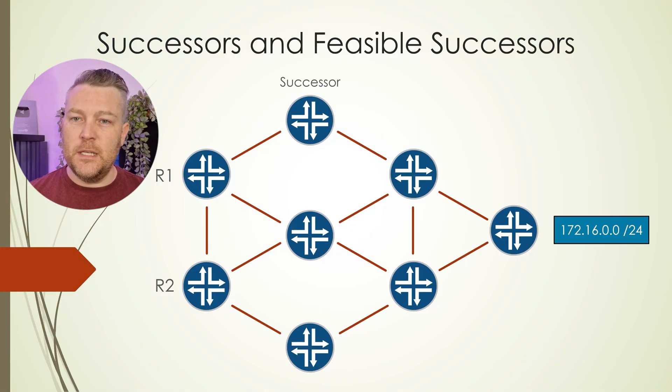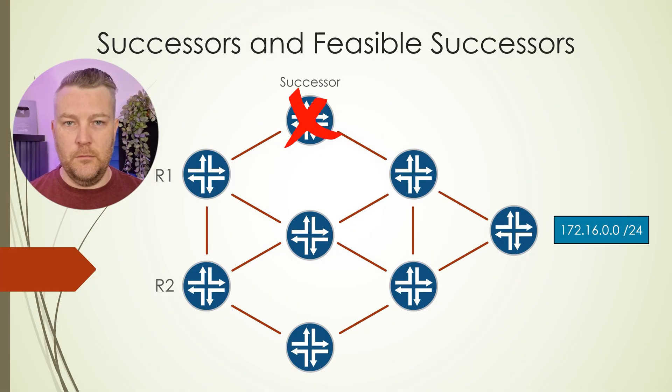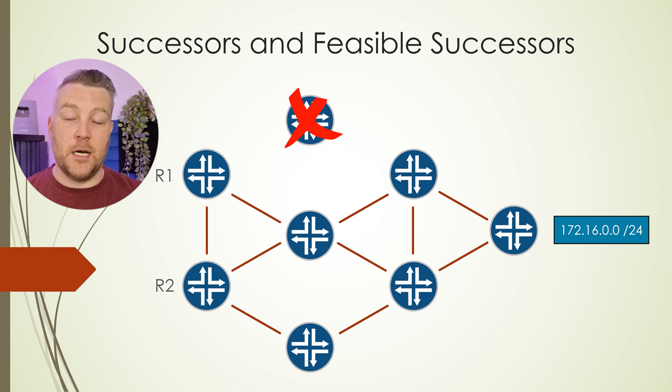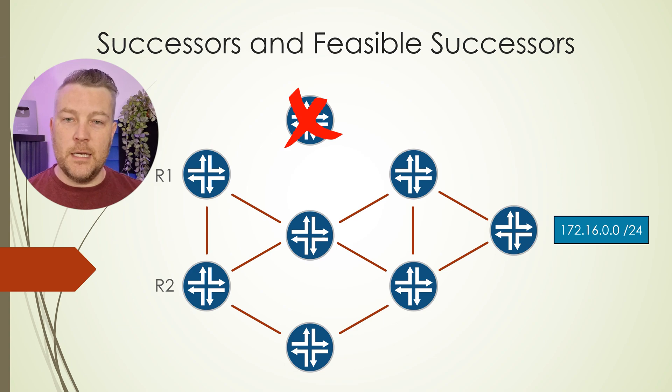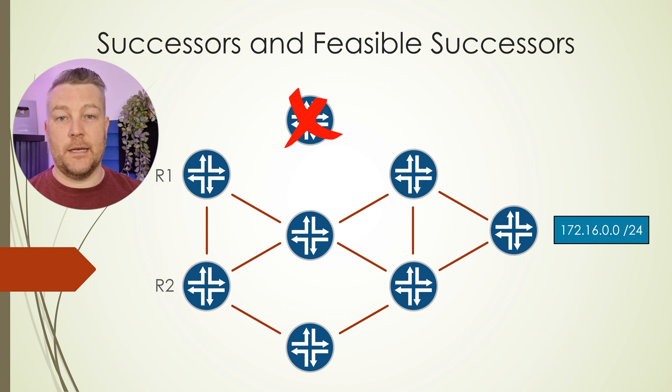Let's think about what happens when a path to a route fails. This could be because of a broken link, or perhaps a router has failed or something like that. So if the successor route has failed for some reason, the first thing that EIGRP will try to do is rely on the feasible successor. And if it has one, it'll immediately install that into the routing table.